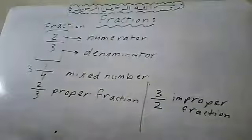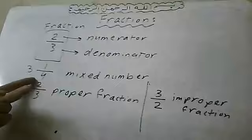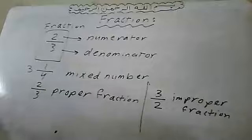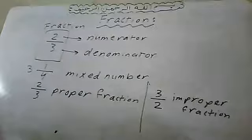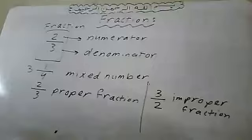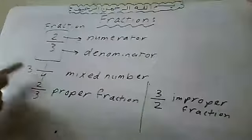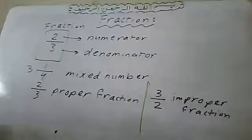Actually fractions have three types. First, if the numerator is less than the denominator, it is called a proper fraction. Second, if the numerator is greater than the denominator, it is called an improper fraction. Third, if the number is formed from a whole number and a fraction, it is called a mixed number.